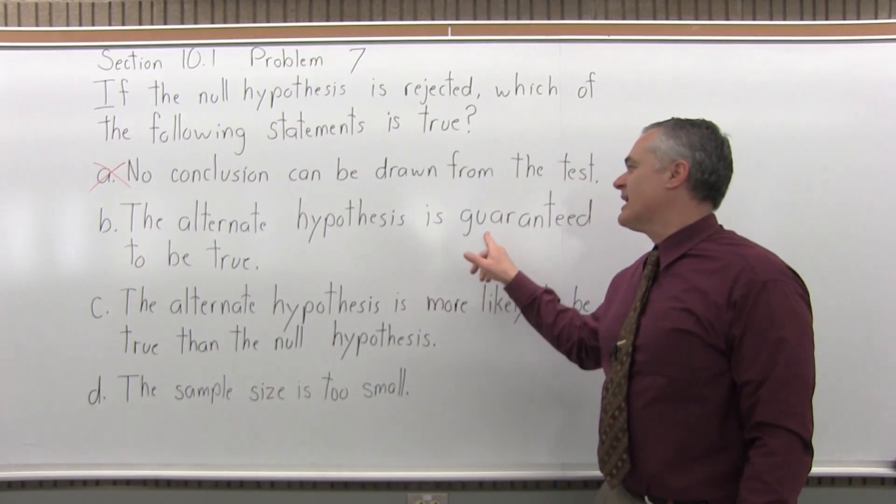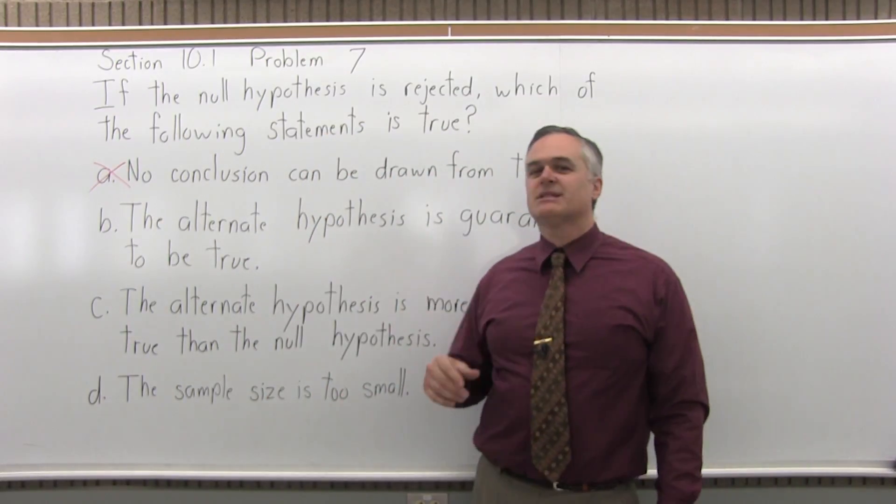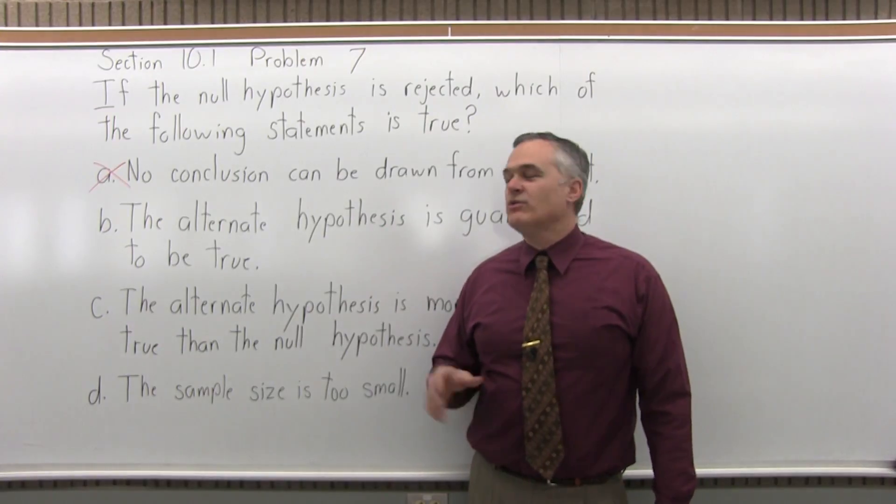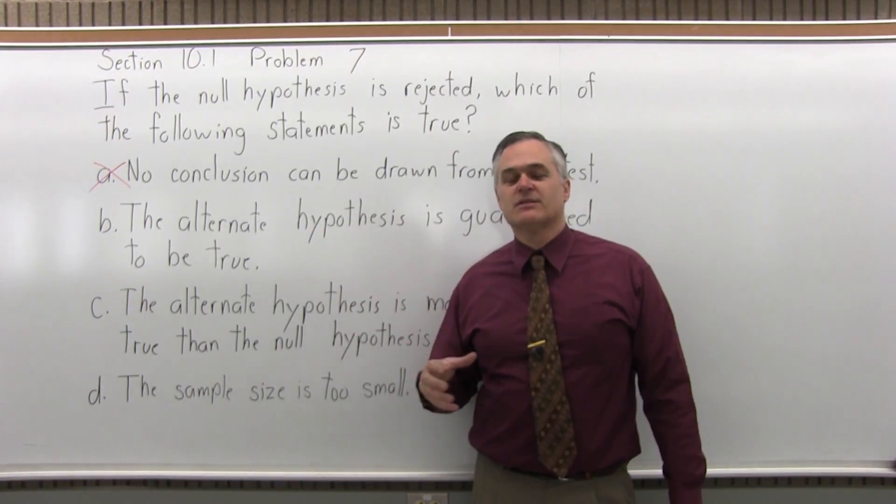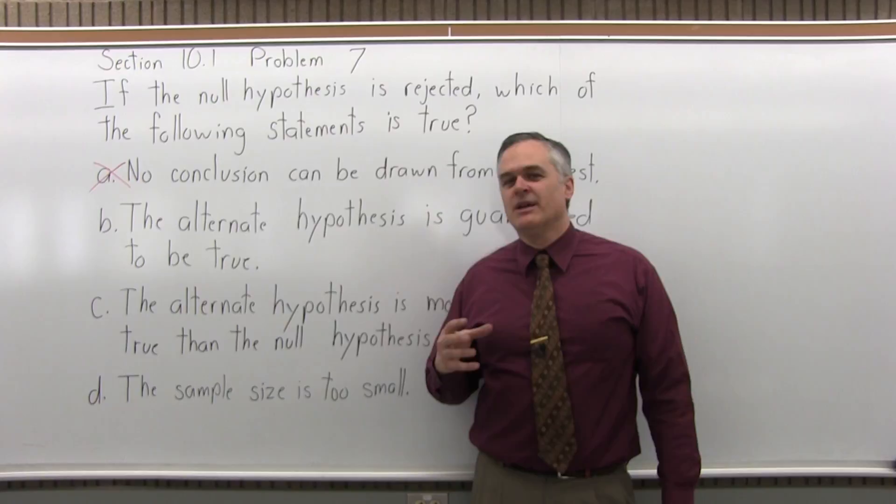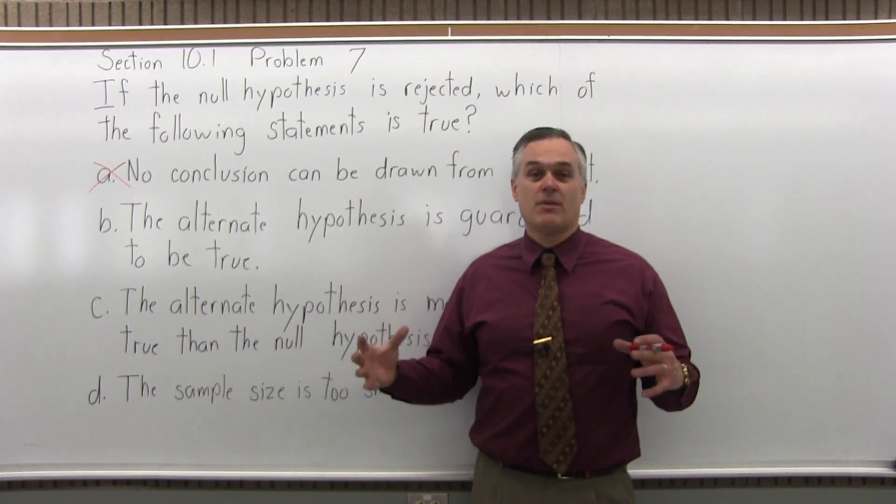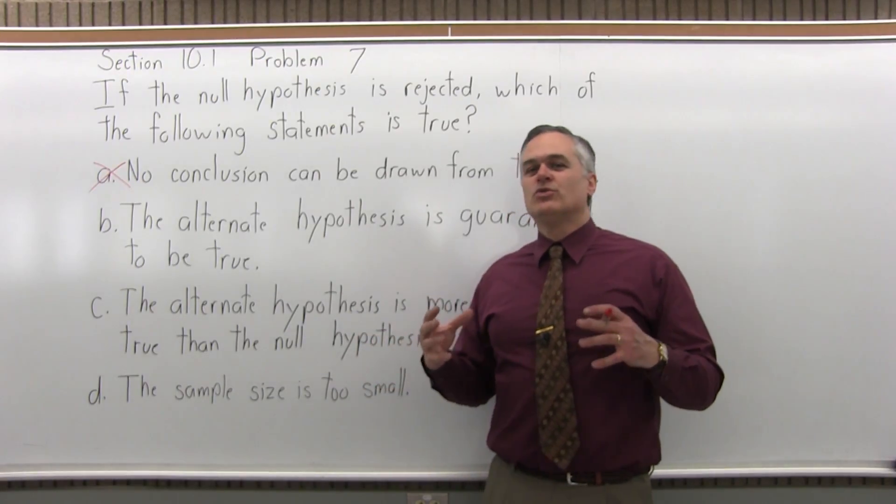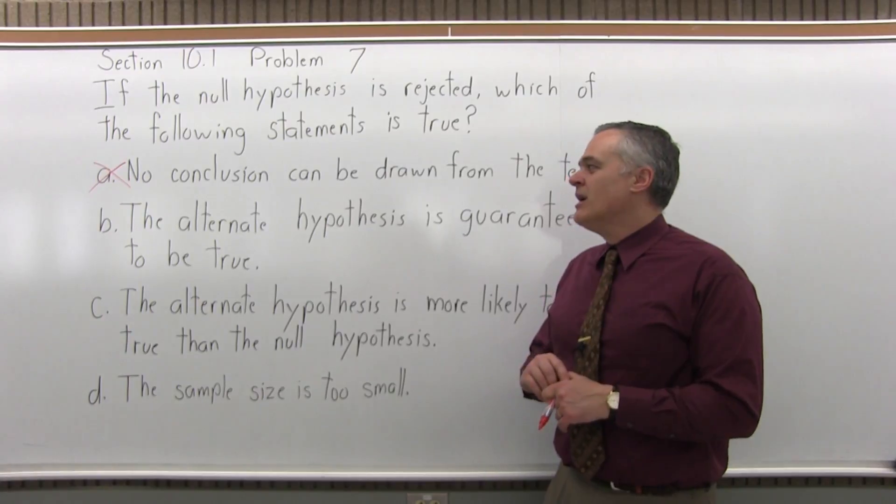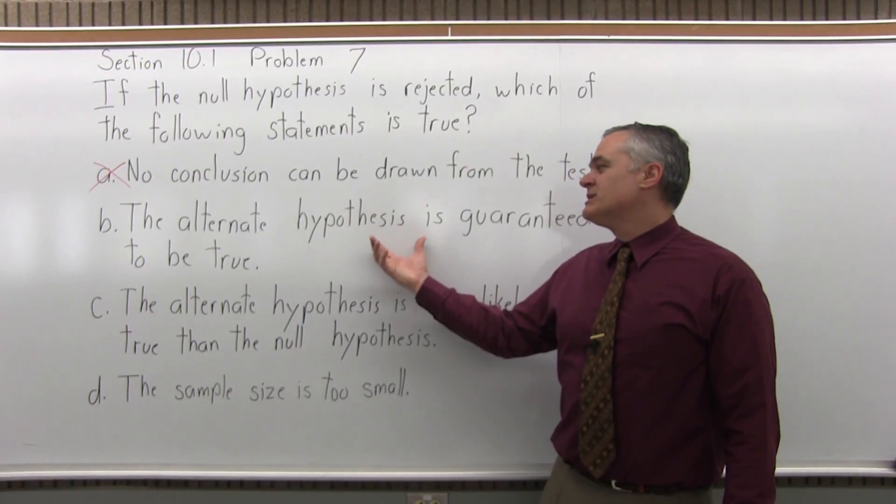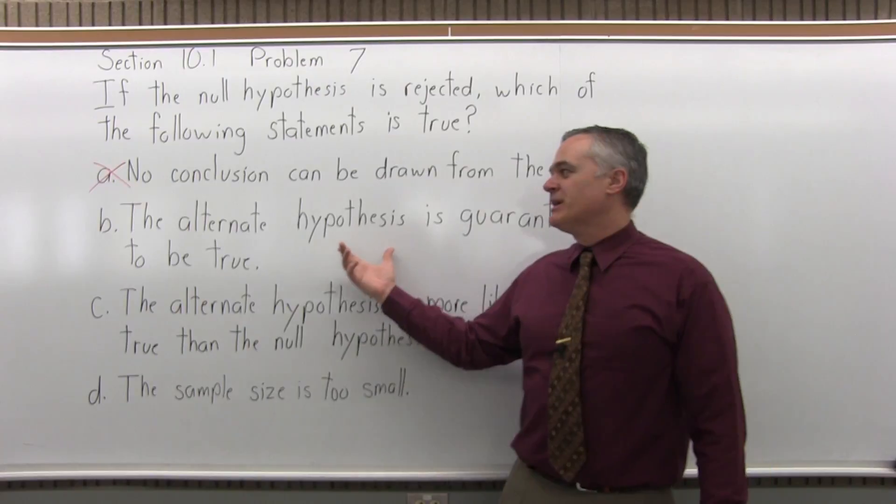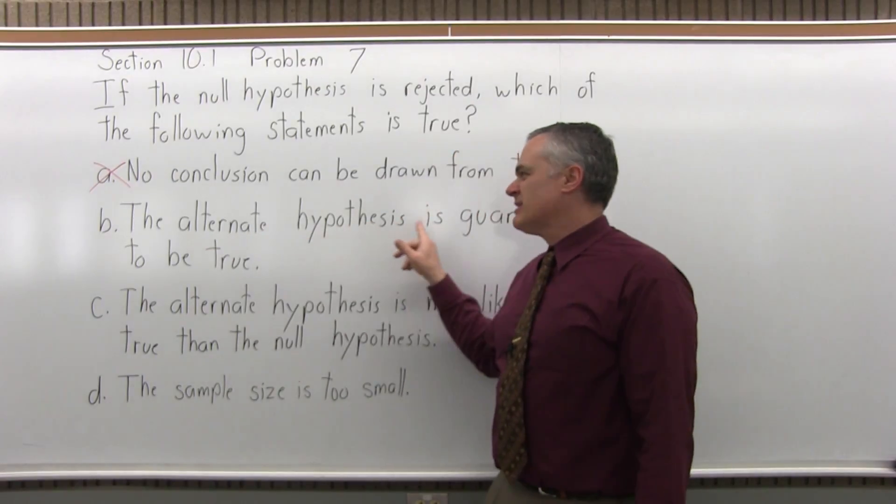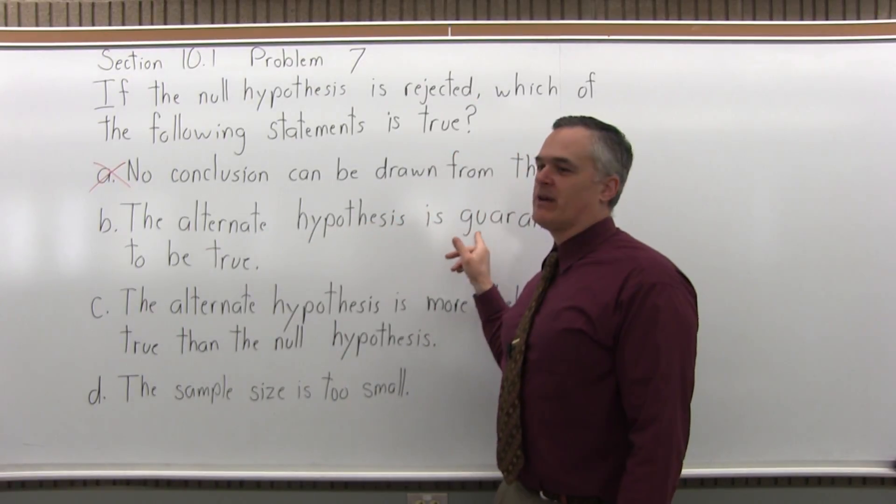The alternate hypothesis is guaranteed to be true. In hypothesis testing, you never have a guarantee. Whenever you're doing any type of thing in statistics like this, the only way to really have a guarantee is if you examine the entire population, which is usually too large to really be practical. So you make statements about or make guesses about the whole population based on a sample. So unless you examine the entire population, there is no guarantee.